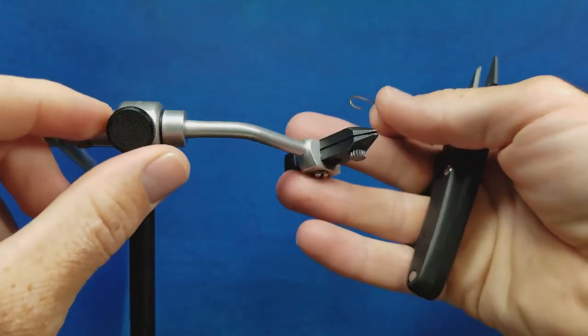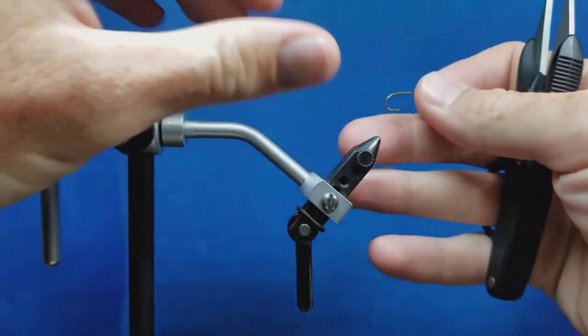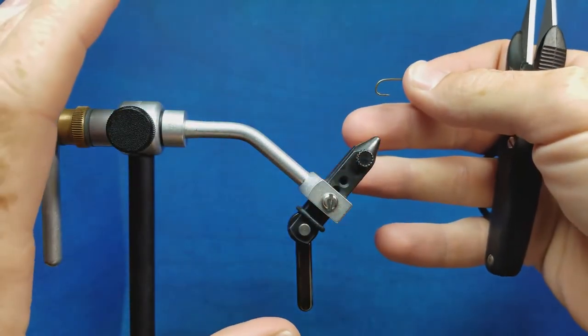What matters here is that when we look at any vise, it's going to have a set of jaws, and the job of these jaws is to firmly and securely hold that hook in place.